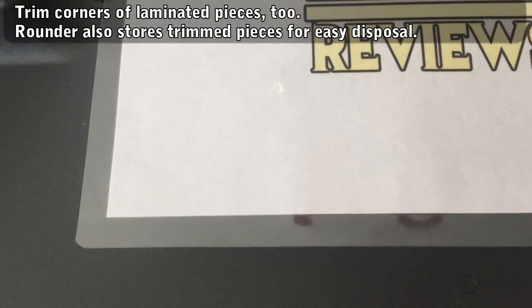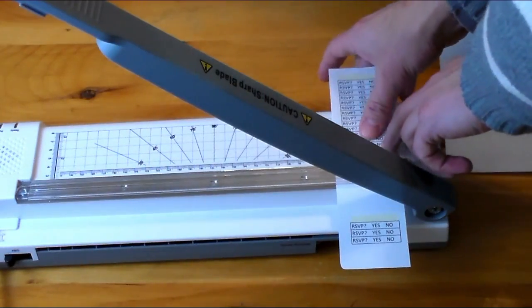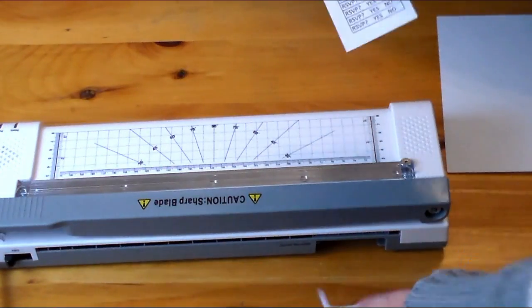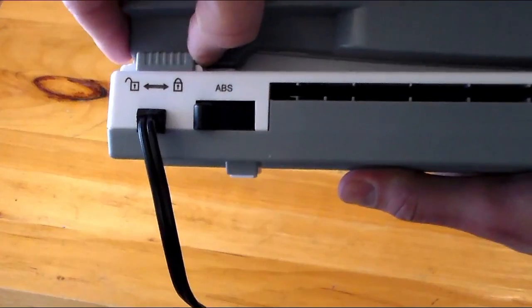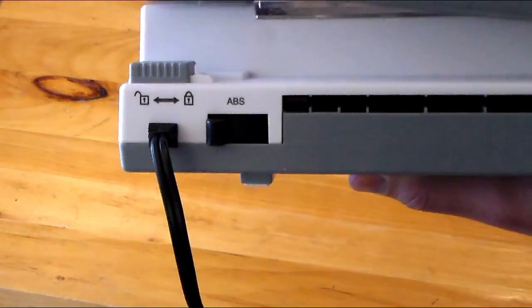The trimmer is nice to have right there so you can get things to the correct size and shape before and after laminating. Just unlock it, line up the paper, and slice up to 8 pieces at once.